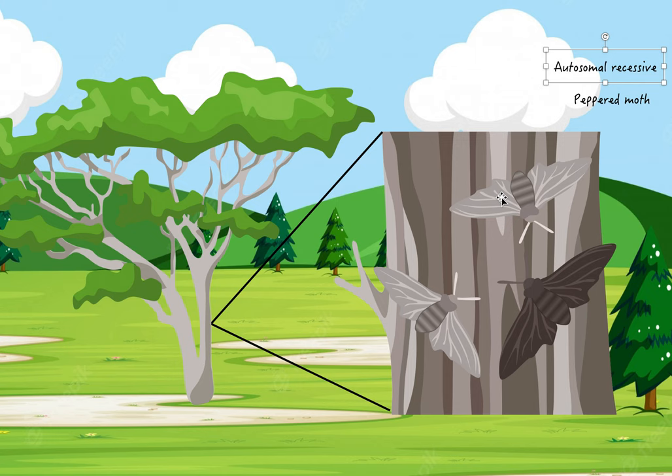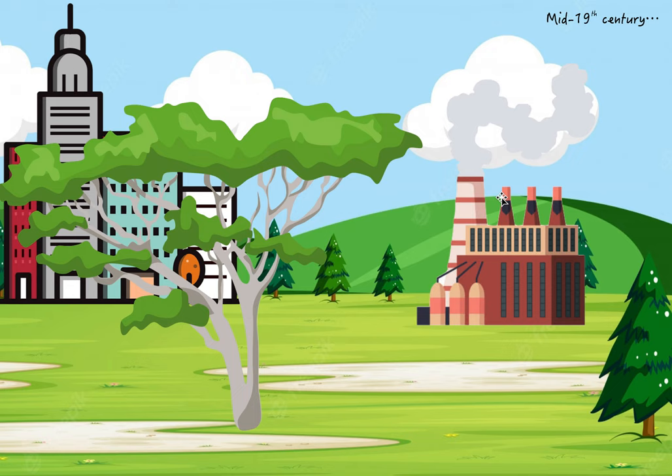So now, continuing with the story. Later on, in the mid-19th century, a lot of the Industrial Revolution started happening. A lot of buildings were being built, a lot of pollution was being created. This pollution ended up destroying some of these organisms that made the tree look white or gray. These organisms are little plants that grew on here that made it look white and gray. So all this pollution killed it.